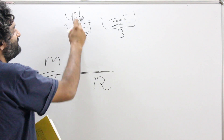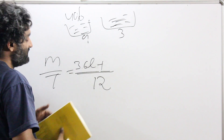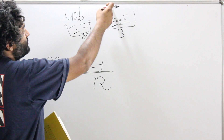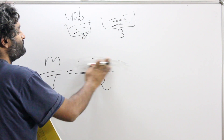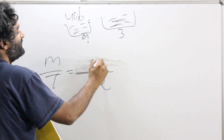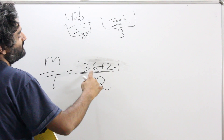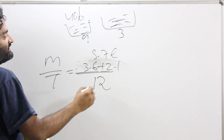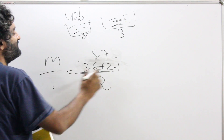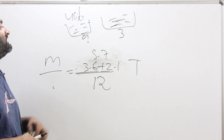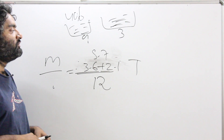40% of 9 liters gives 3.6 liters of milk. In the other solution there was 70%, so 70% of 3 liters gives 2.1 liters. Overall that's 3.6 plus 2.1, which equals 5.7 liters. The final answer is 5.7 by 12. We know 1/12 is 8.33, so multiply 5.7 by 8.33 and you get 47.5% — the same answer we got the other way.